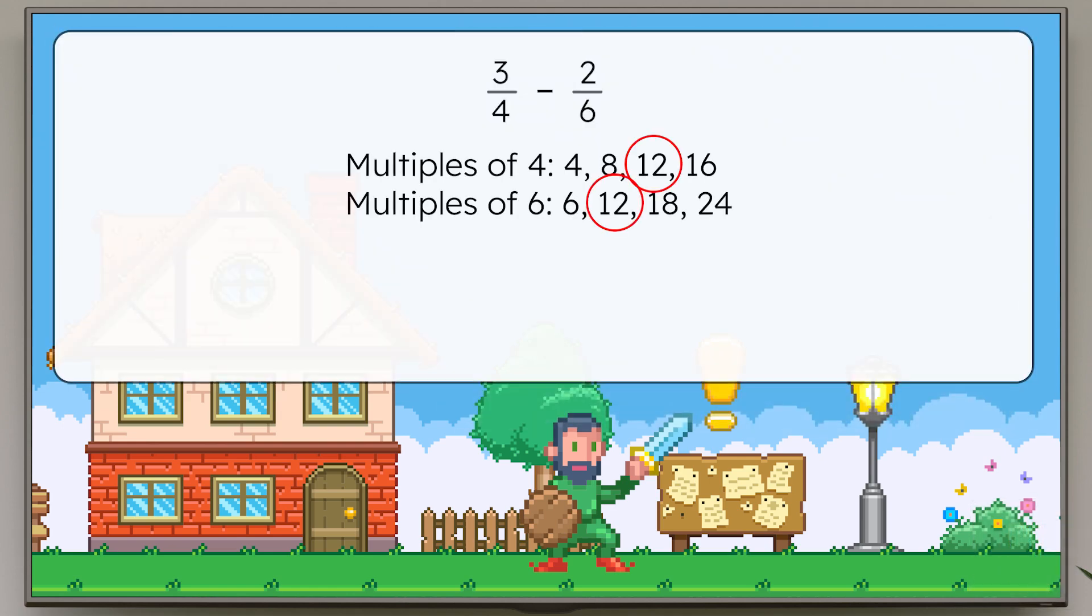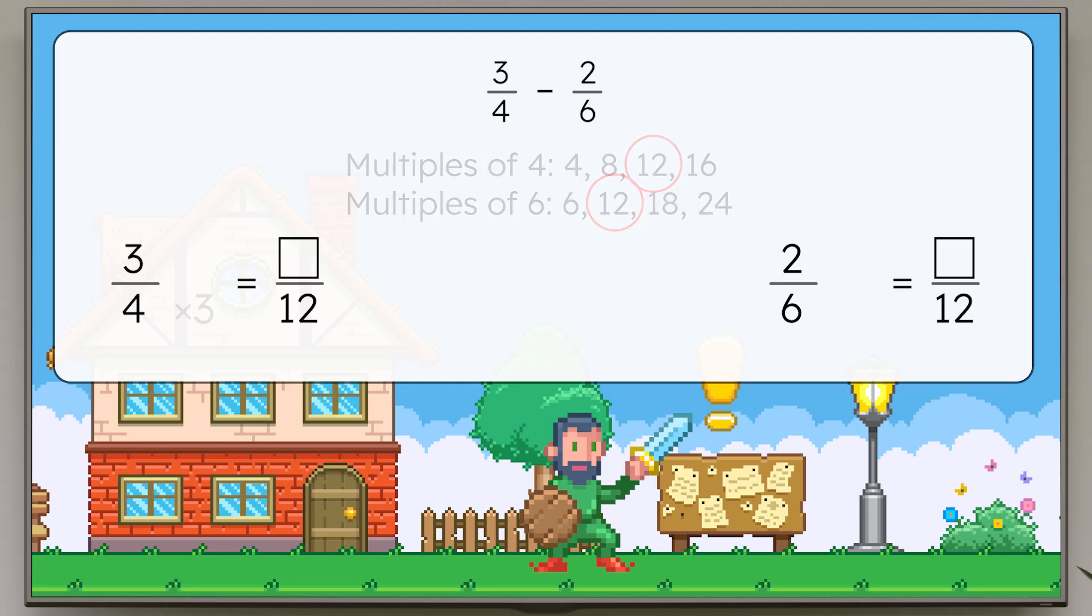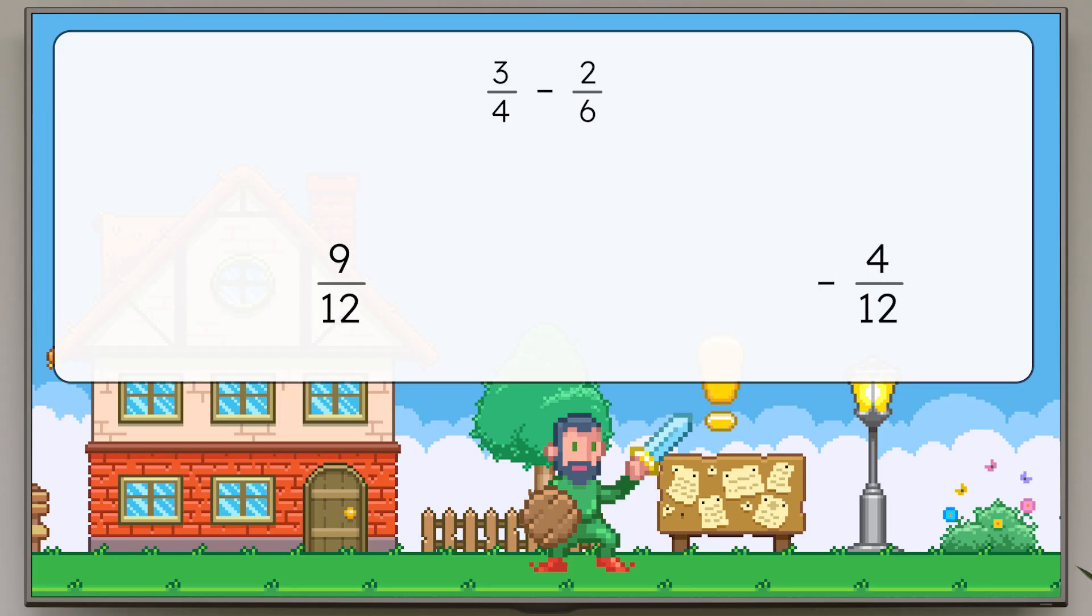Four and six both have twelve as a multiple, so we'll use that as our common denominator. Since four times three equals twelve, and three times three equals nine, three-fourths is equivalent to nine-twelfths. Six times two equals twelve, and two times two equals four, so two-sixths is equivalent to four-twelfths. Now we can subtract. Nine-twelfths minus four-twelfths equals five-twelfths.